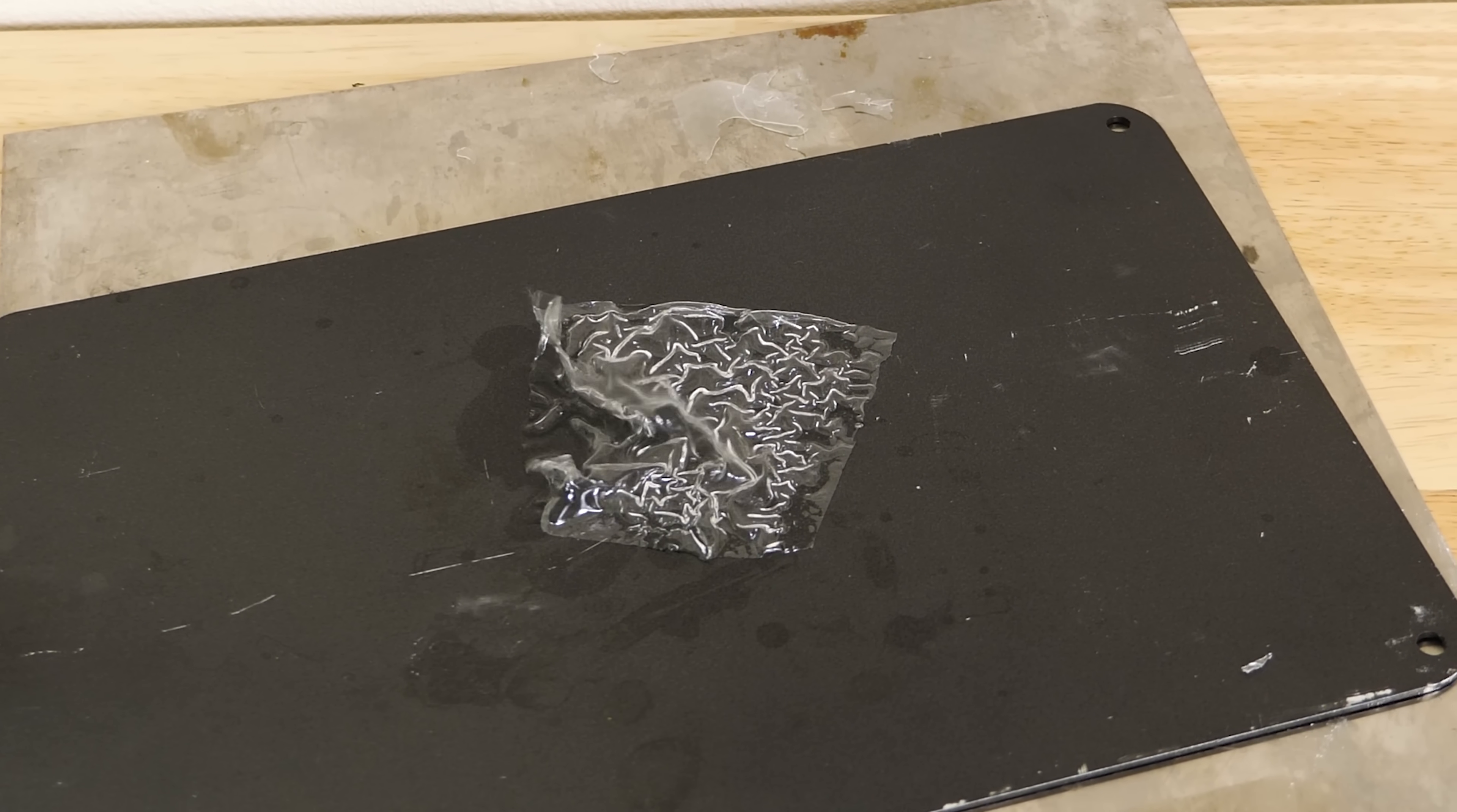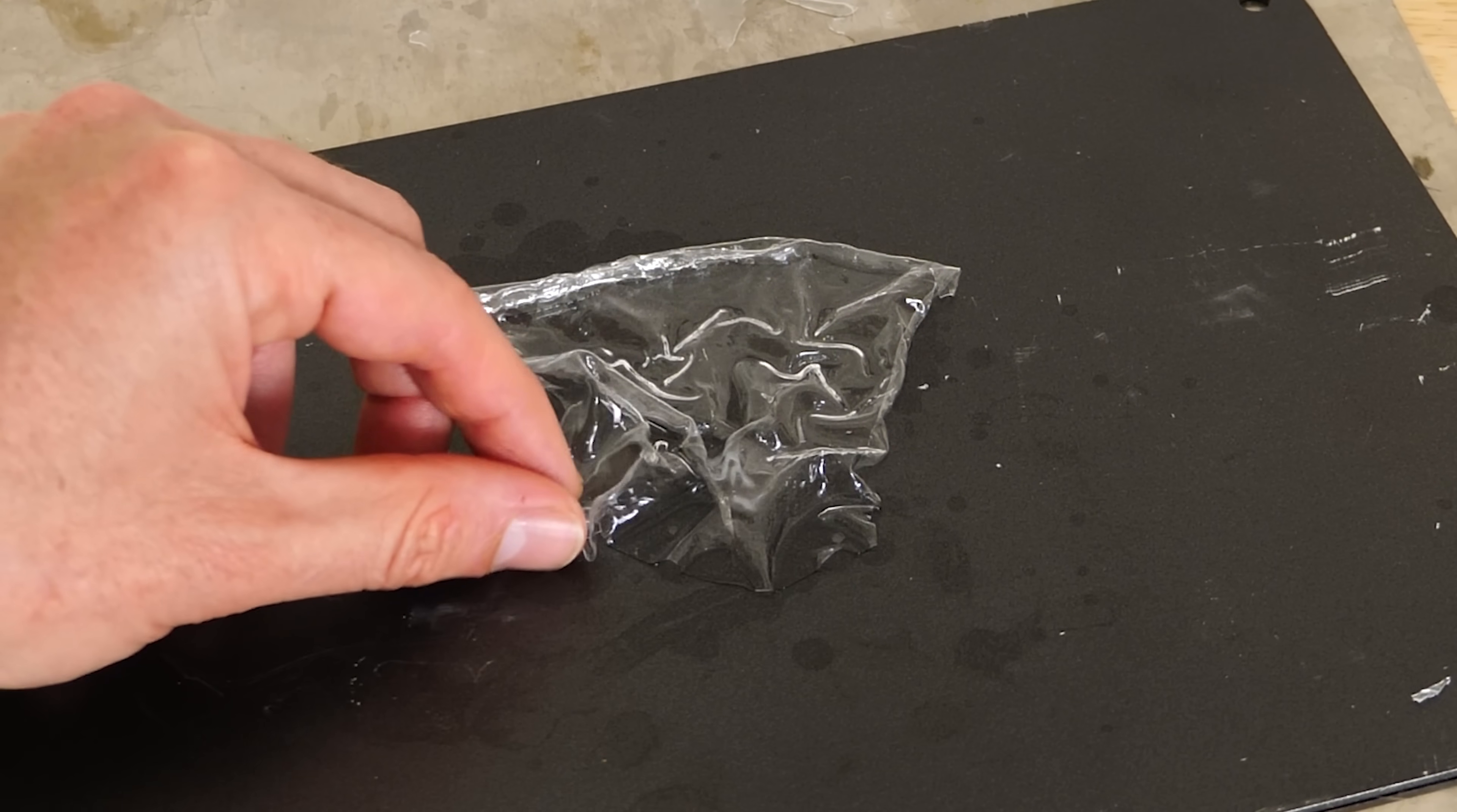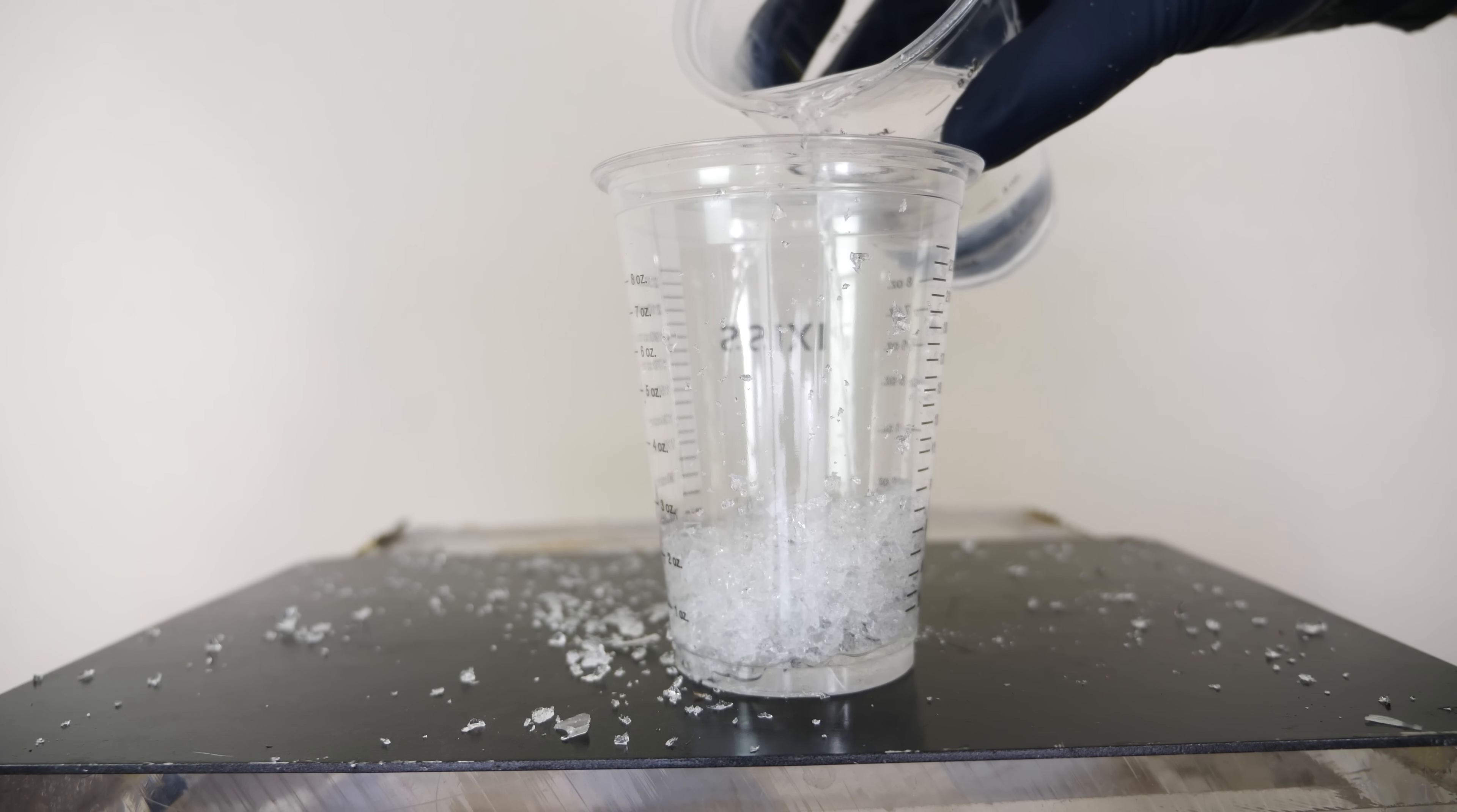The reason this is happening is because hexane is actually attracted to the PDMS bonds. And so it can actually absorb into the polymer matrix and it expands the matrix. So you get a huge increase in volume. You can see this PDMS that I ground up in little pieces and then pour hexane on it. The volume increases.